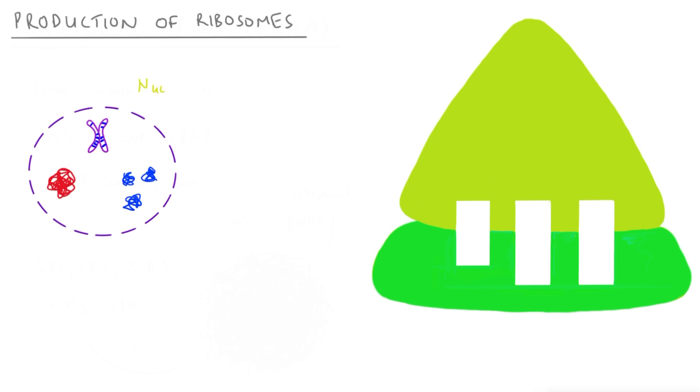It starts in this area called the nucleus. So what actually happens is you have these guys here, which are chromosomes, and you have specifically five pairs of chromosomes which have the genes which code for ribosomal RNA.